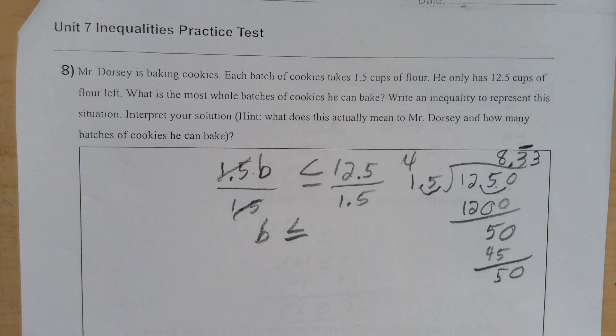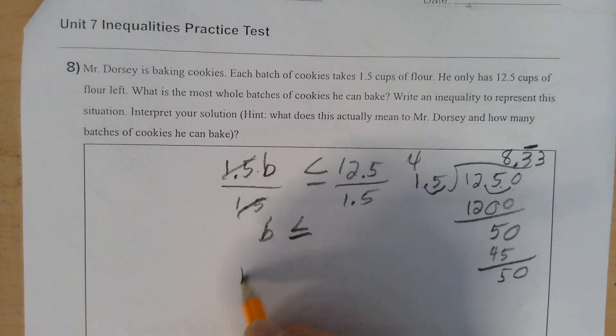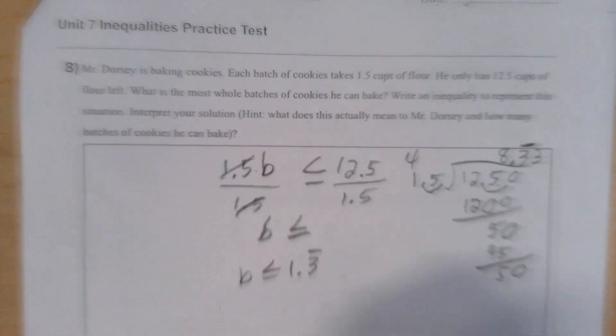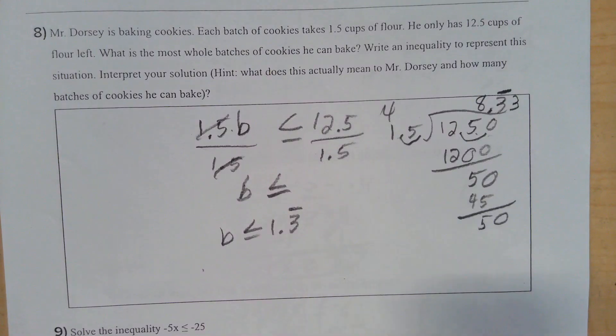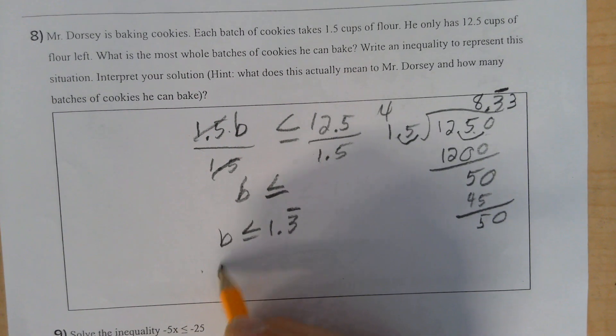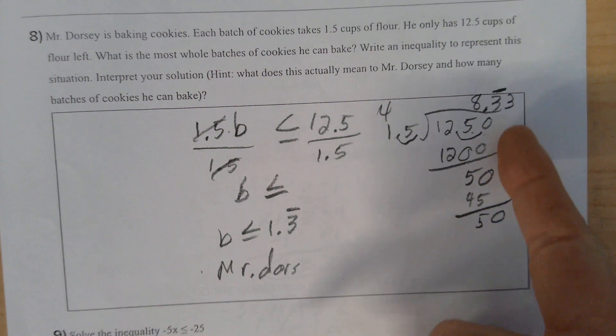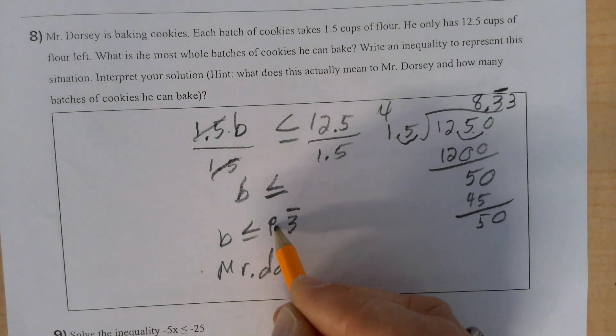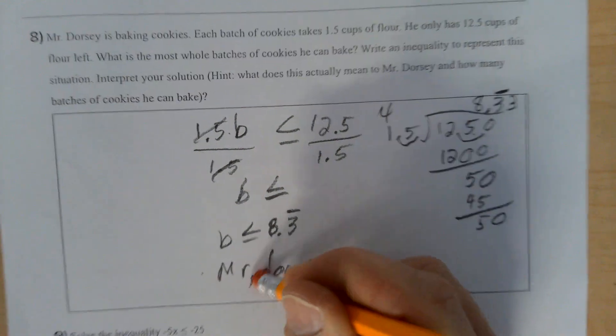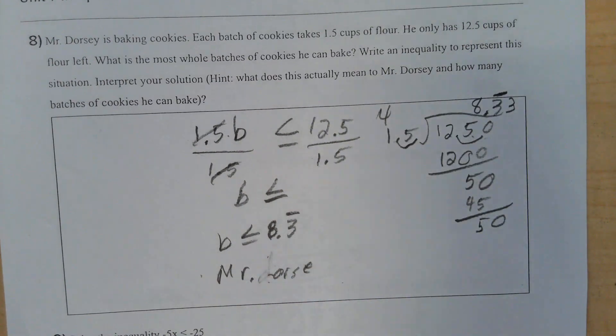And what that means is, batches is less than or equal to 8.3 repeating, which really means that because it's batches of cookies, you're not really going to make a third of a batch, which is what .33 is. So Mr. Dorsey can make... 8.3. I am really tired, can you tell?